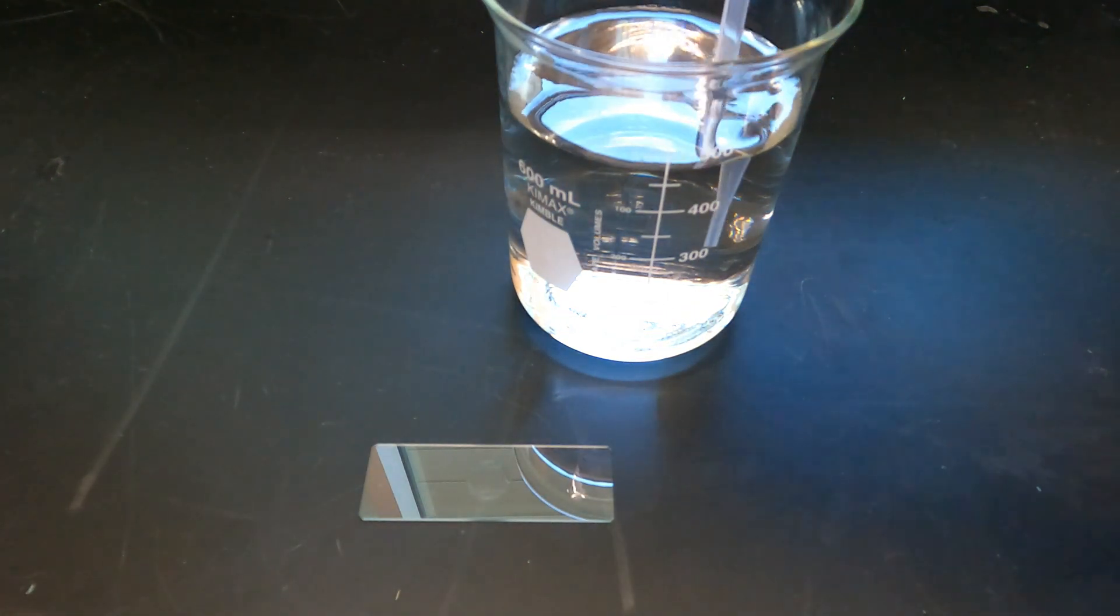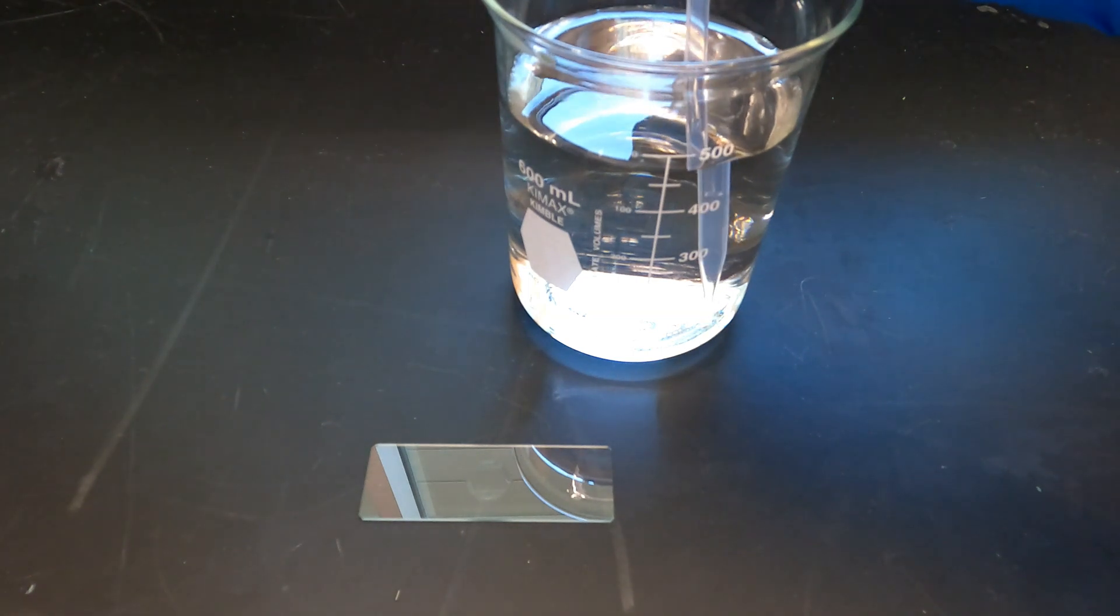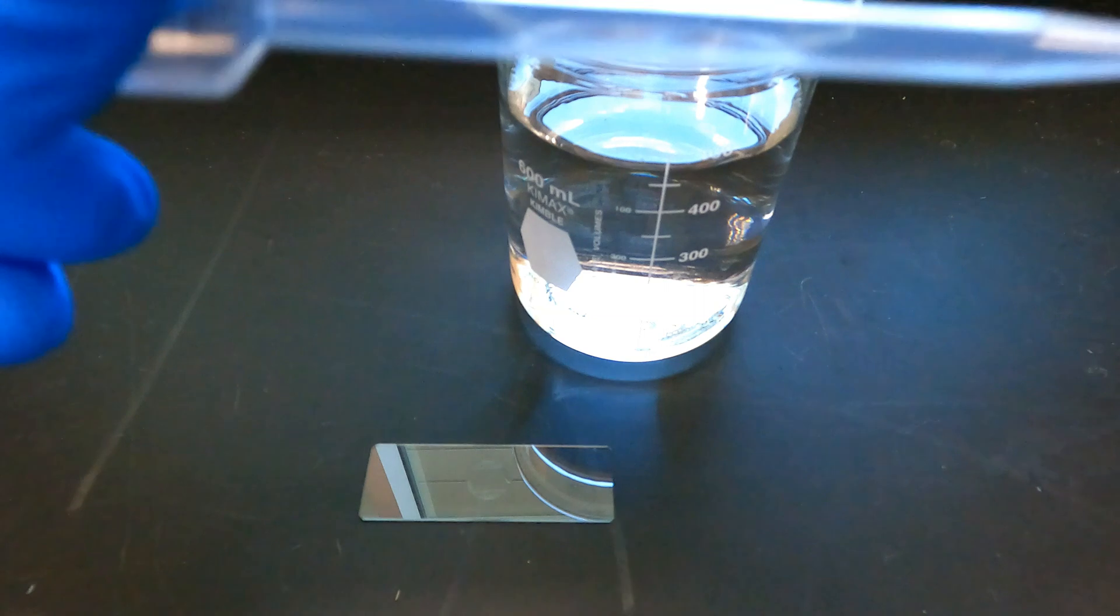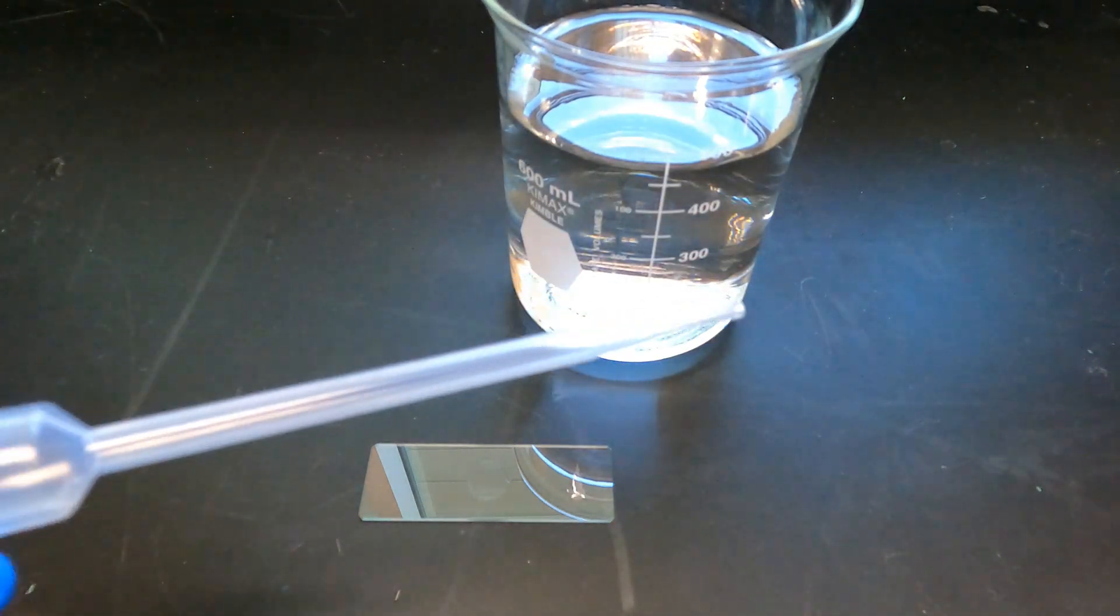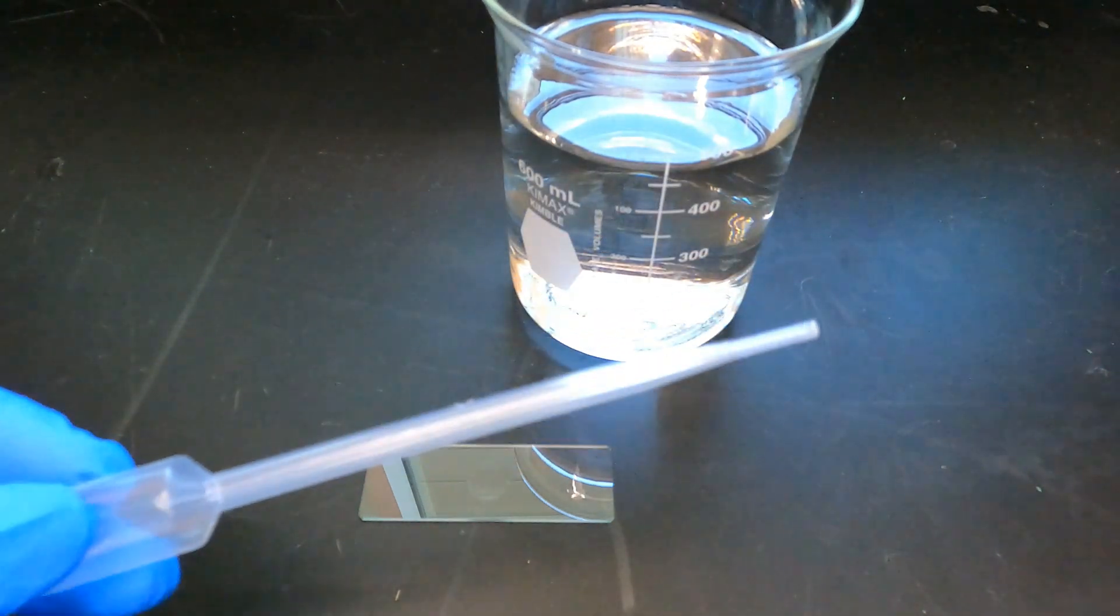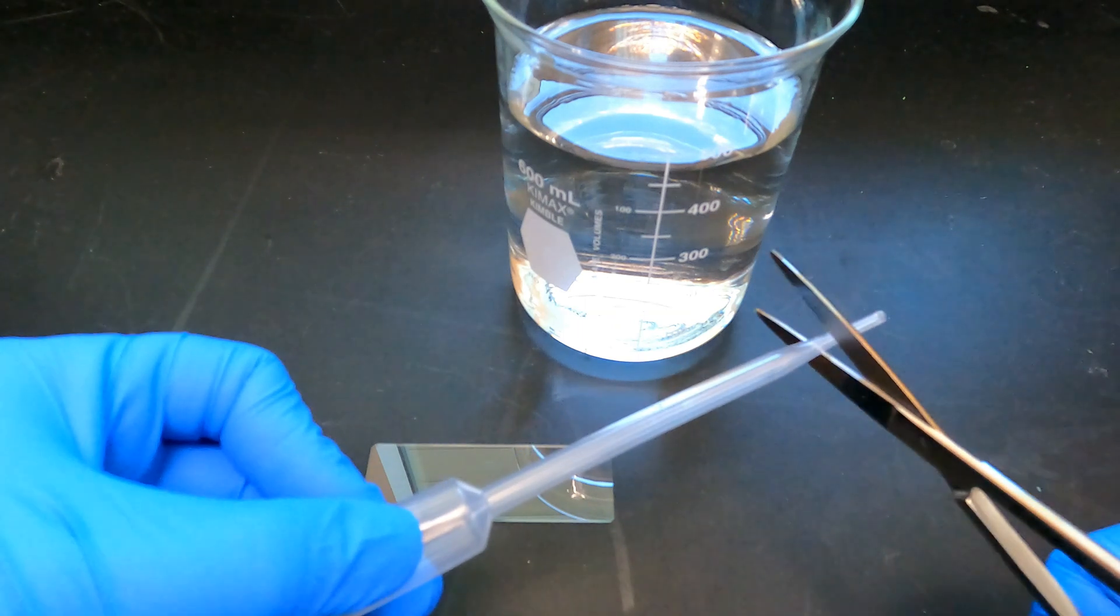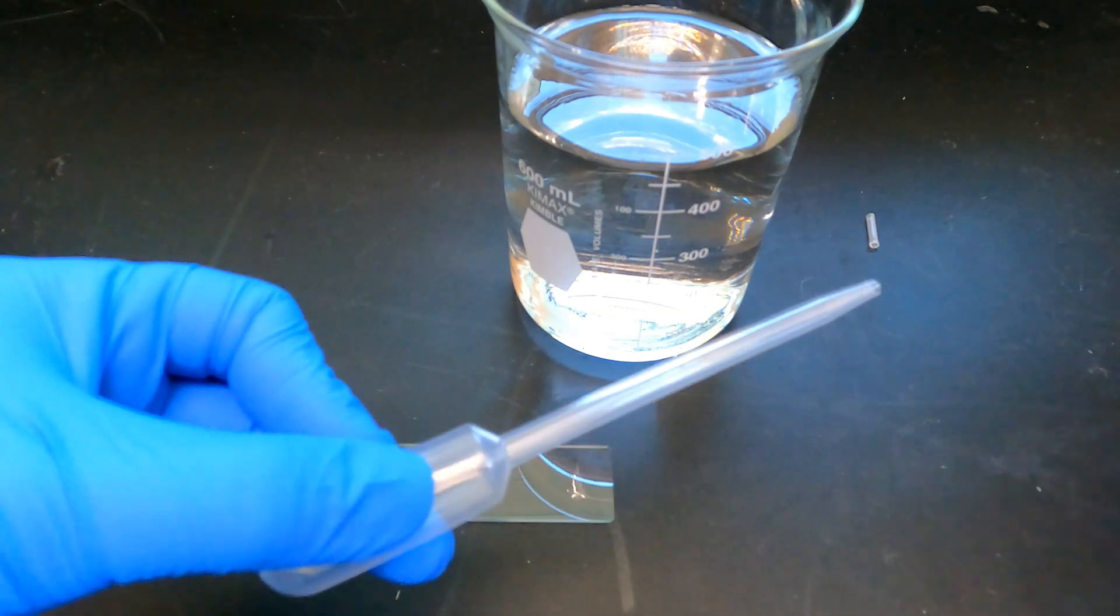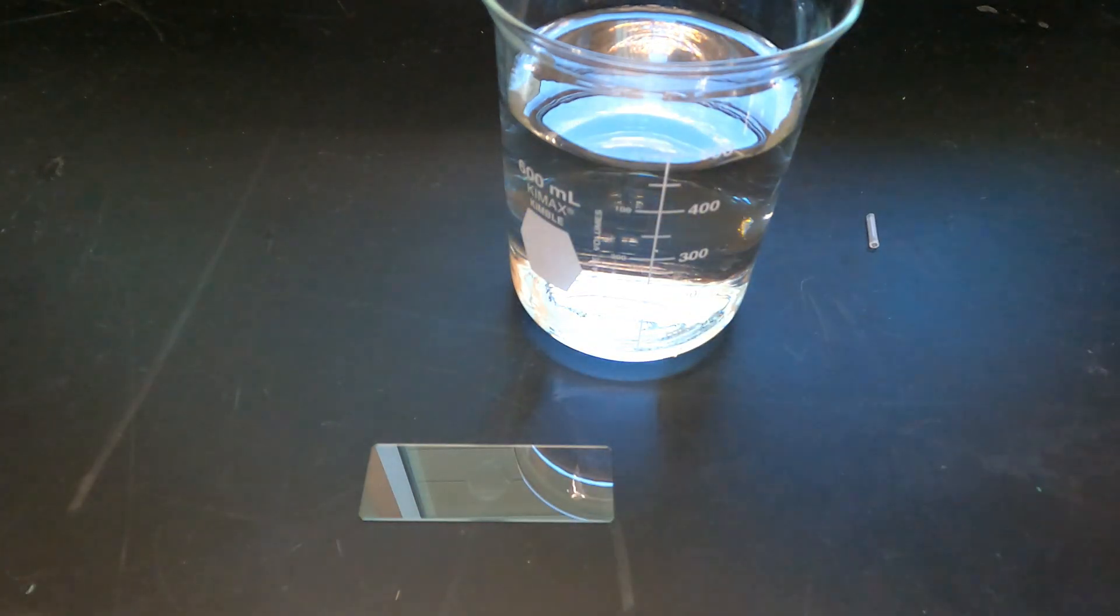Next, you will use a dropper or transfer pipette to capture a single Daphnia from its container. Some Daphnia may be larger than the hole at the end of the transfer pipette. If this is the case, be sure to use a pair of scissors to trim the end of the pipette up to where the diameter of the hole is larger so as to accommodate the body of Daphnia without damaging it.